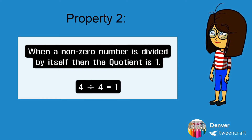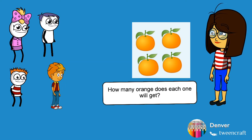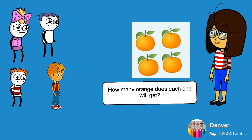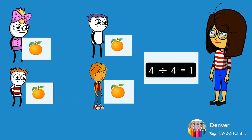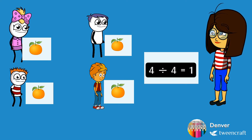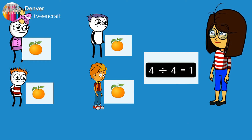Property two: when a non-zero number is divided by itself, the quotient is one. Here you can see four divided by four equals one. To explain property two, let us take this example. You can see four kids and four oranges. How many oranges does each one get? Each one will get one orange, so four divided by four equals one. Thus it shows that when a non-zero number is divided by itself, the quotient is one.